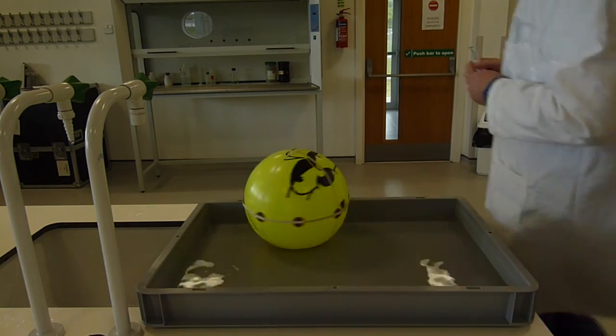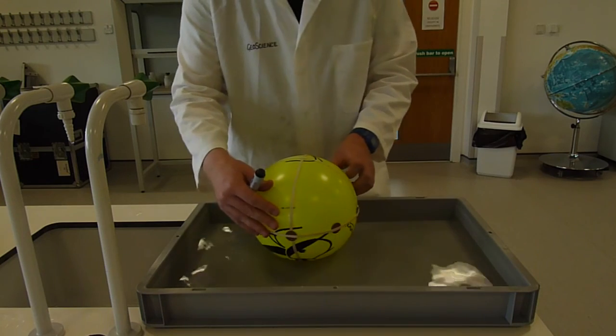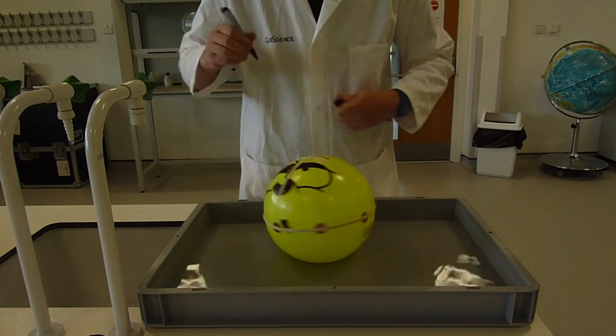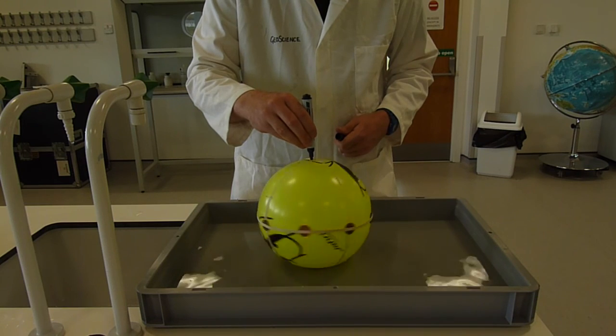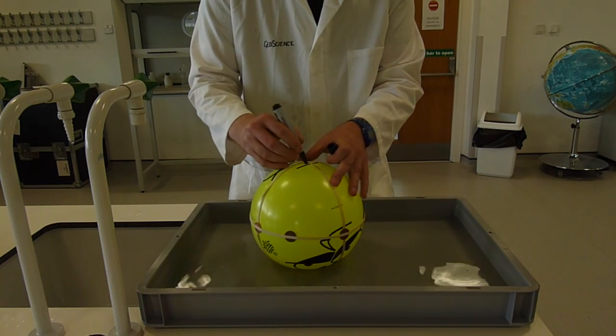So once you've done that, you can mark out the position of the polar rotation. So this is just with a whiteboard marker pen. Okay, so we've got a nice stable rotation there.